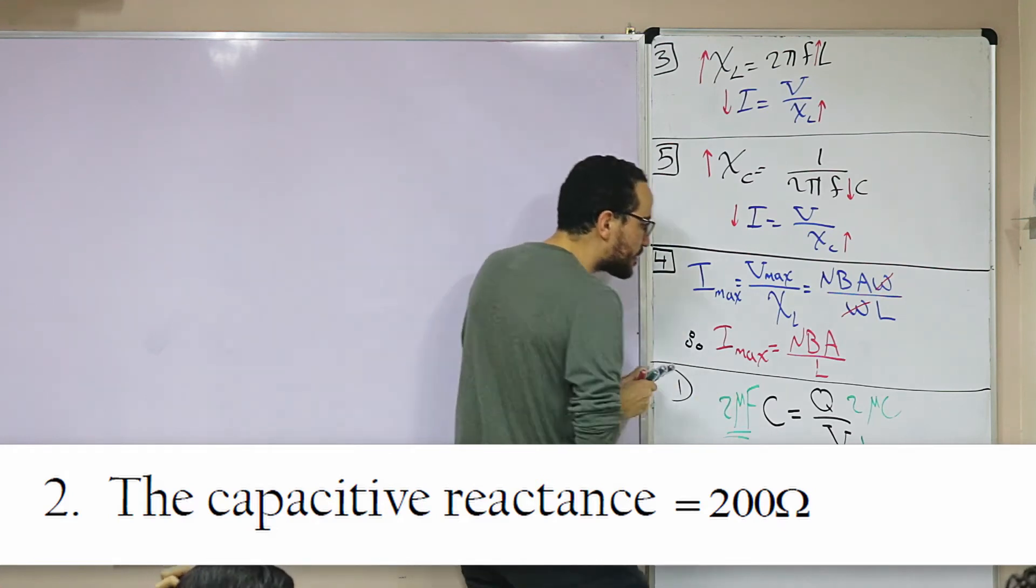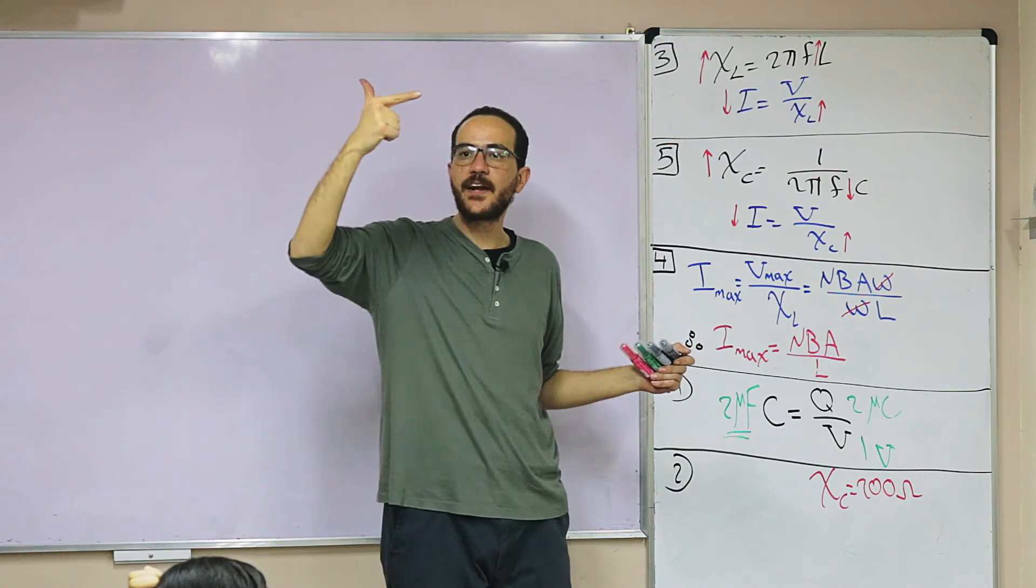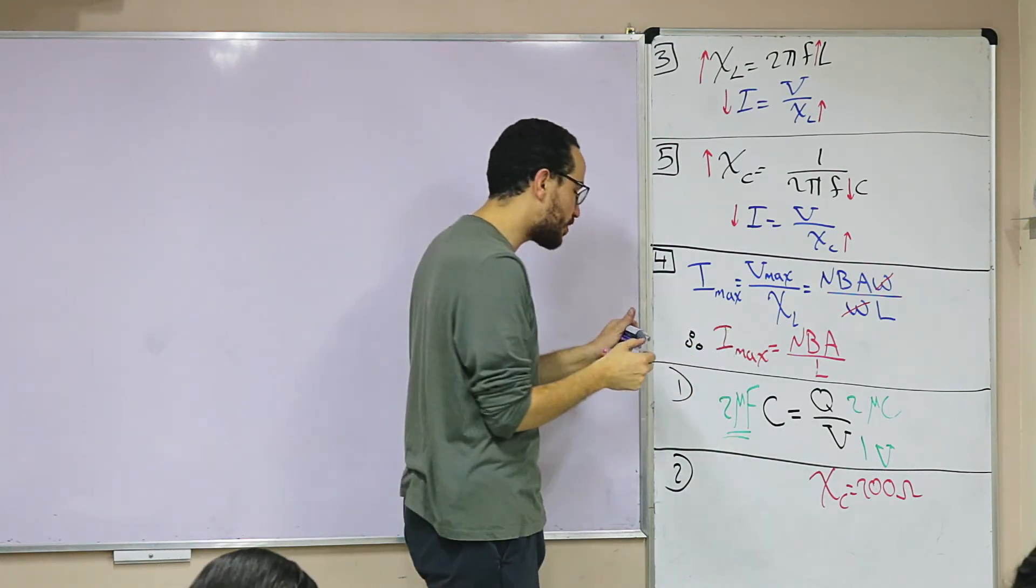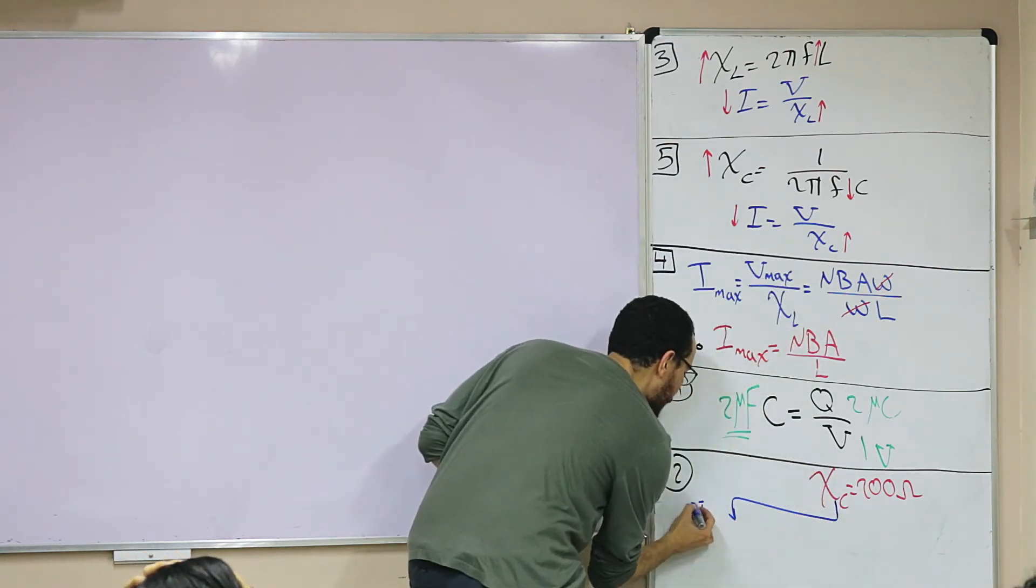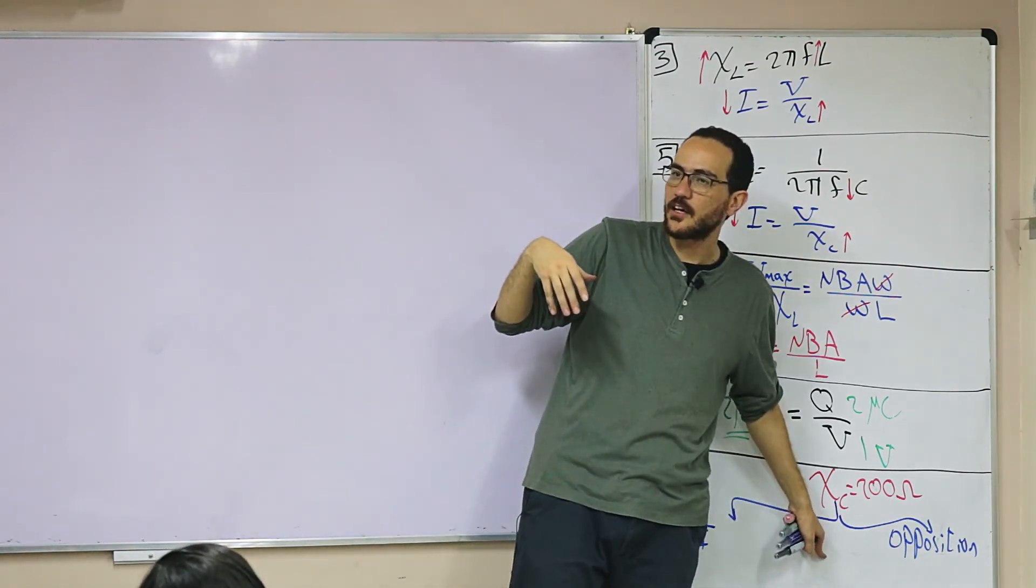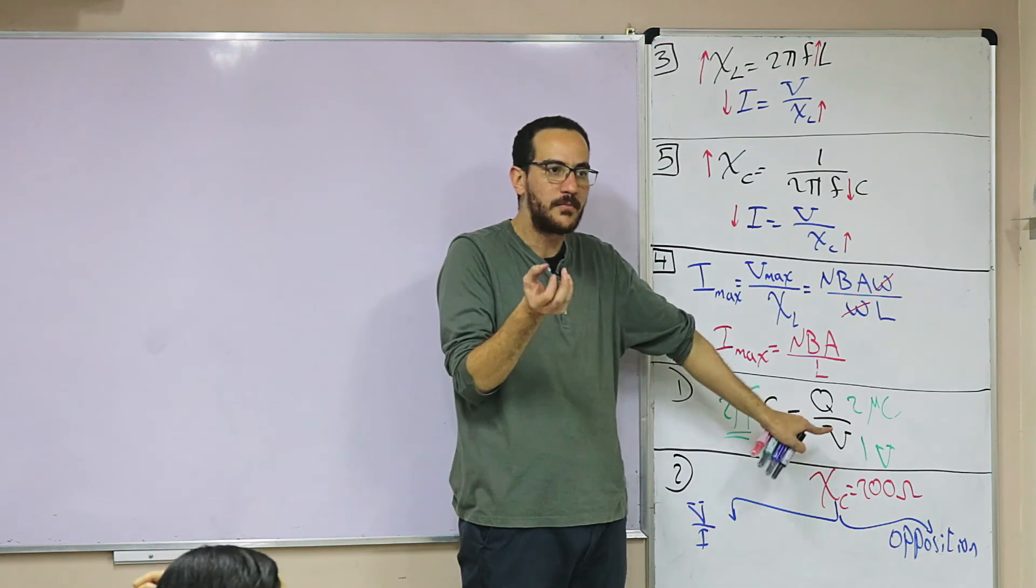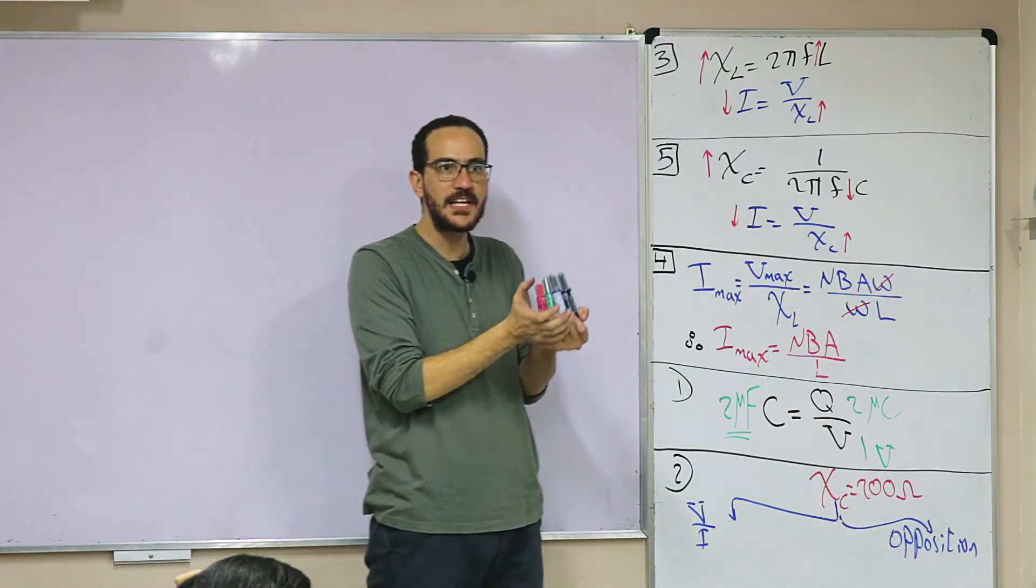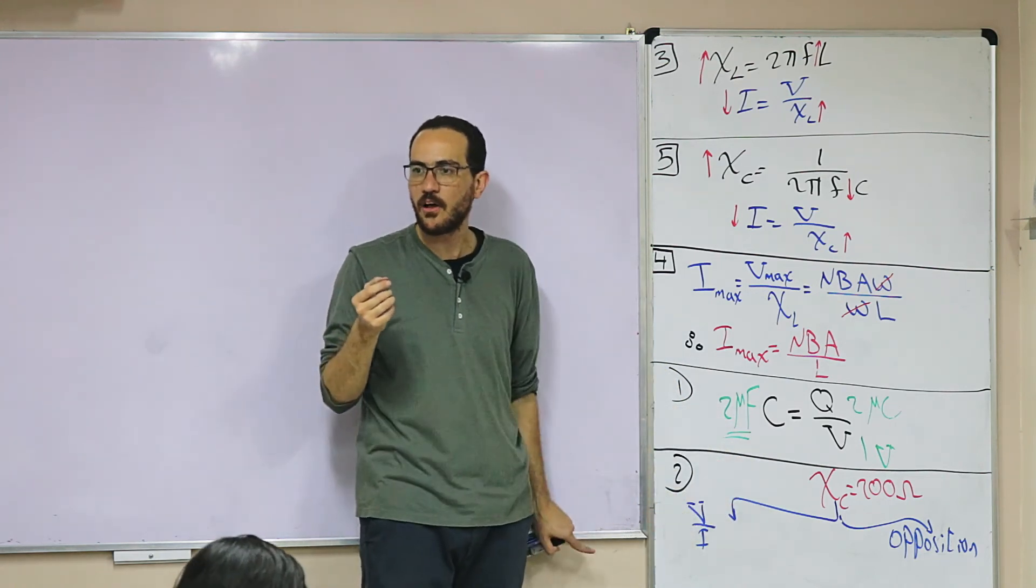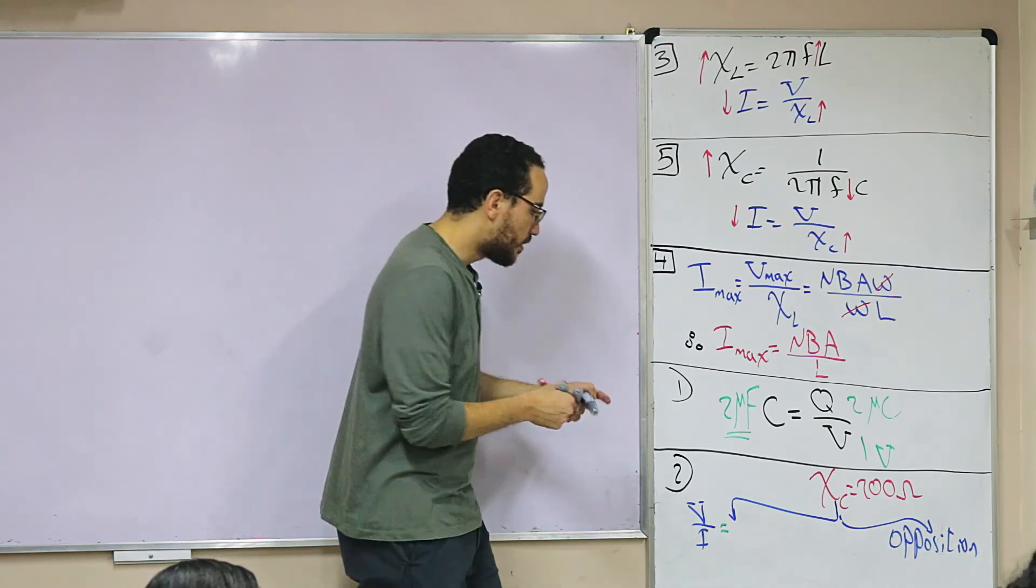Two: The capacitive reactance is 200 ohm. The capacitive reactance, which is XC. The resistance, the capacitive reactance, the inductive reactance, the impedance—the four of them are oppositions to current. They have two definitions: either I say that the ratio between voltage and current, or I say that the opposition. It is the opposition to alternating current due to existence of a capacitor, or I say that the ratio between voltage and current.